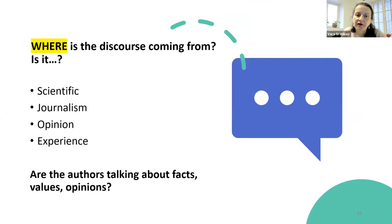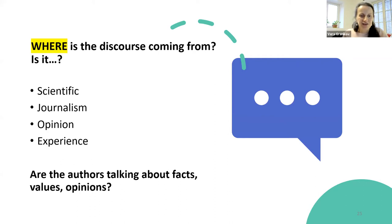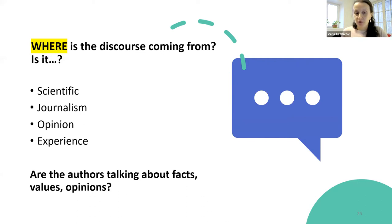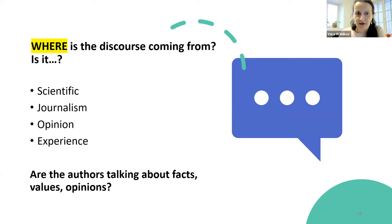Now 'where' — where is the discourse coming from? Is it scientific, based on research evidence? Is it journalism? This could be a scientific journalist writing it, but not necessarily a researcher. Is it opinion? Is it experience? Ask yourself: are the authors talking about facts, values, or opinions? It's all interrelated and sometimes difficult to decipher which one it is, but it's a way for you to raise red flags.